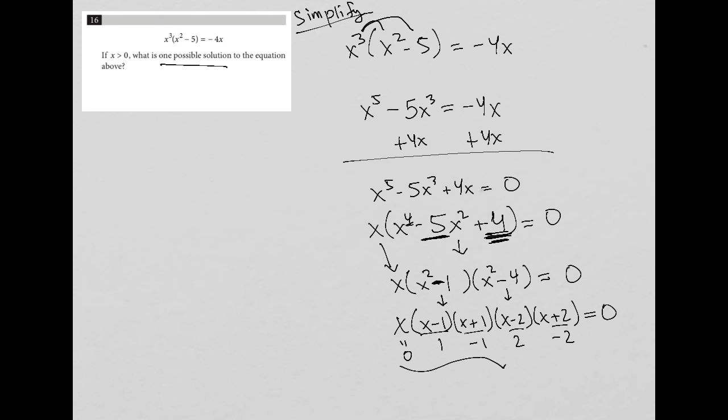So really any of these will work except for obviously negative 1 and negative 2 because the question tells us that x is greater than 0. So if you put in 1, it would work. You put in 2, it would work. Actually, also 0 can't work because 0 is not greater than 0. So if you say that x equals 1, you're going to get it correct. If you say x equals 2, you'd also get it correct.